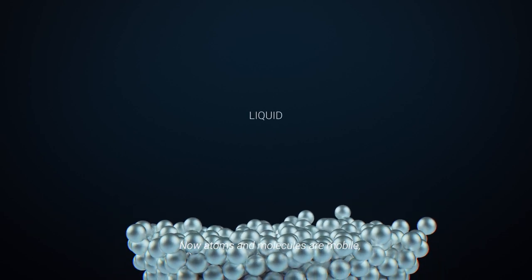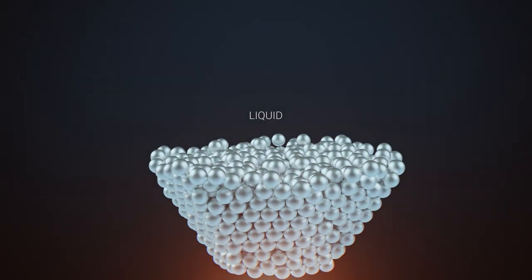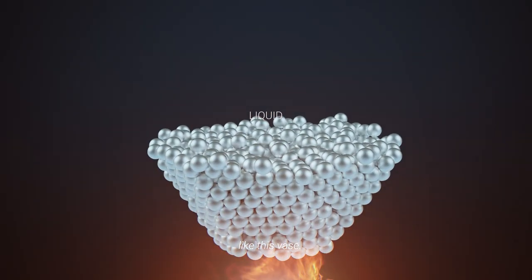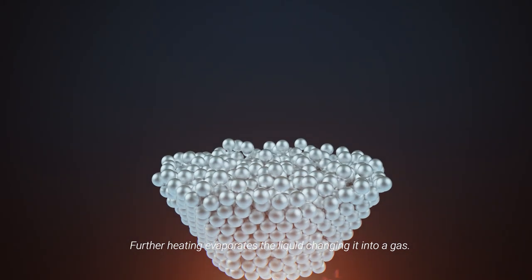Now atoms and molecules are mobile, so the liquid phase can assume any shape, like this vase. Further heating evaporates the liquid, changing it into a gas.